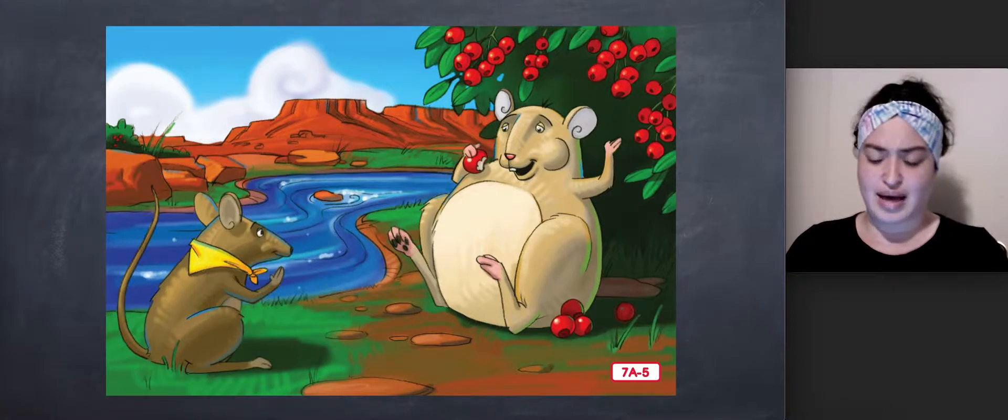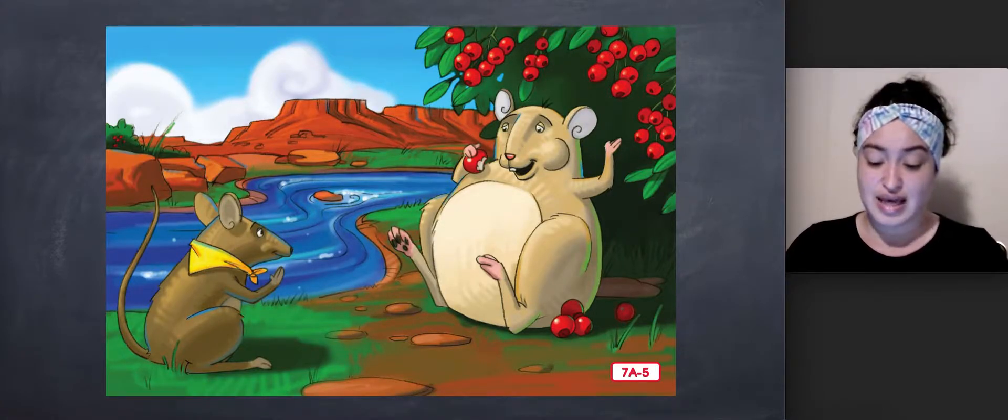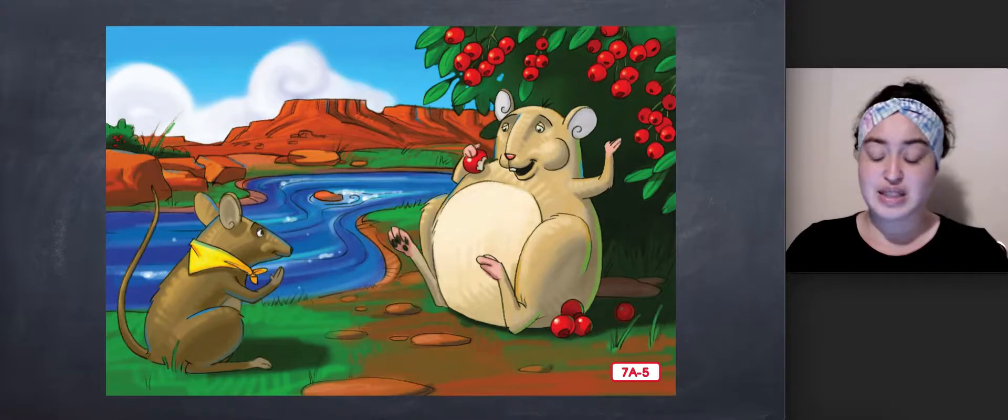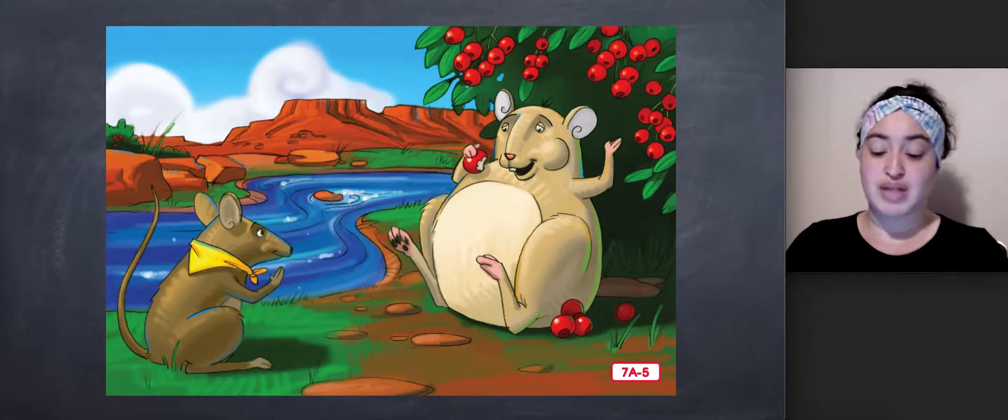Where are you going? asked the fat mouse. To the far-off land, explained Jumping Mouse. However, I would like to rest a while and eat some of the juicy berries that grow on the bushes beside the stream. The word stream means a small body of water similar to a river.